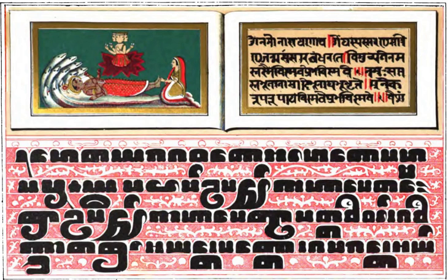Pali is a highly inflected language in which almost every word contains, besides the root conveying the basic meaning, one or more affixes which modify the meaning in some way. Nouns are inflected for gender, number, and case. Verbal inflections convey information about person, number, tense, and mood.